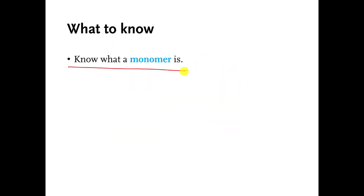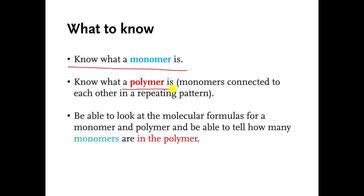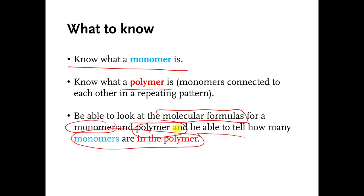What do I want you to know? I want you to know what a monomer is — that's a little molecule that can be connected. You can take a bunch of them and connect them to each other to make a polymer. You should know what a polymer is. You should be able to look at the formula of a monomer and polymer and be able to tell me how many monomers were used to make up the polymer. You'll see an example of this coming up in a later video. And that's the end of this video talking about polymers.